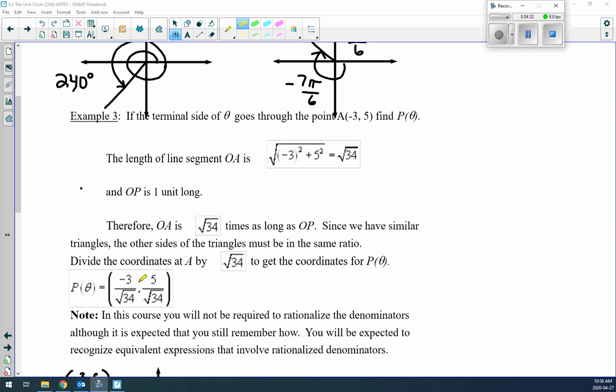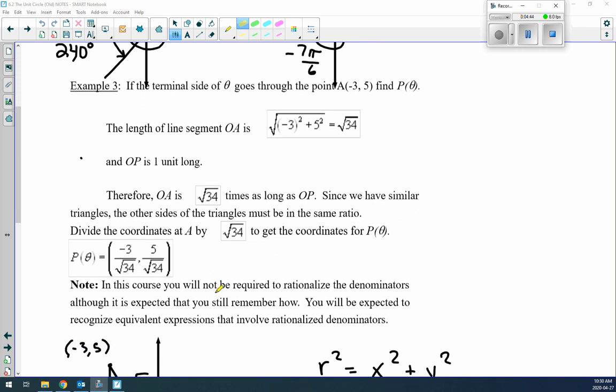What's our coordinate points? You could look at it as X is x over r and Y over r. X is -3 over √34, and you can rationalize the denominator if you want. The Y value is 5 over √34.